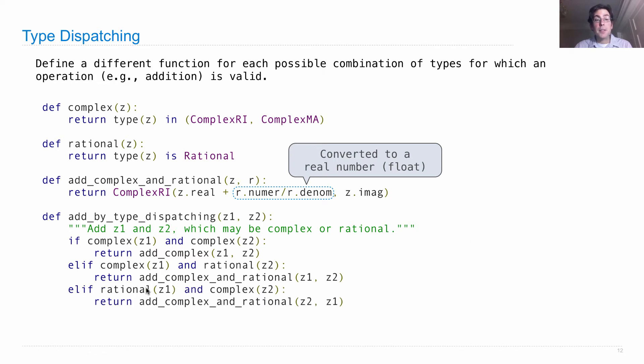Now, what if the first one is rational, the second one is complex? Well, we can still use this function, but just pass in z2 as the complex number and z1 as the rational number.